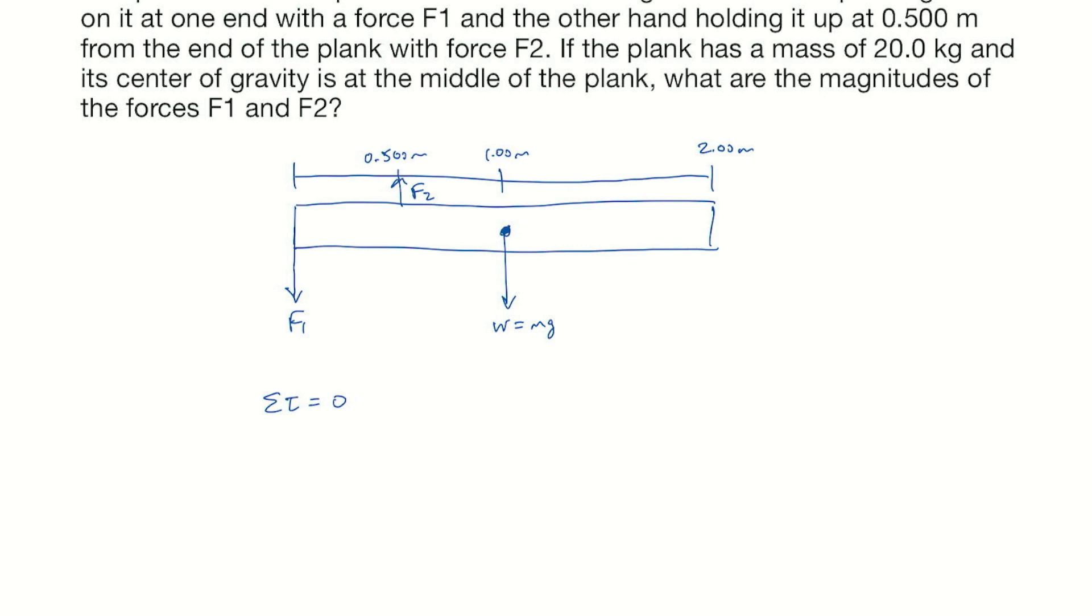Then if only F1 were there, it would cause the plank to rotate counterclockwise like that. And if F2 was the only one there, it would cause clockwise rotation. And counterclockwise rotation is taken to be the positive rotation.